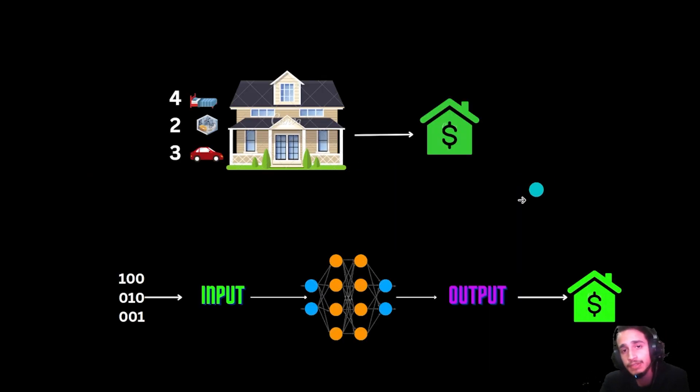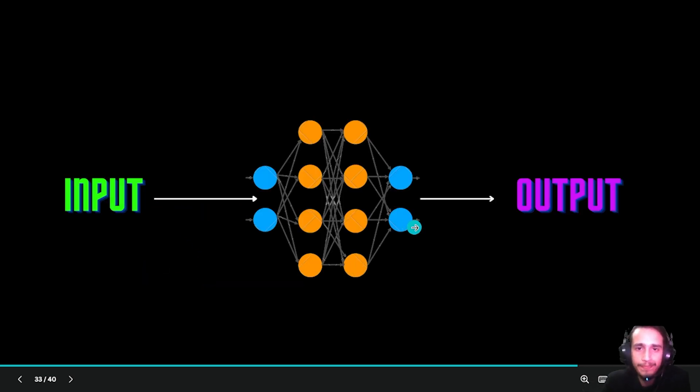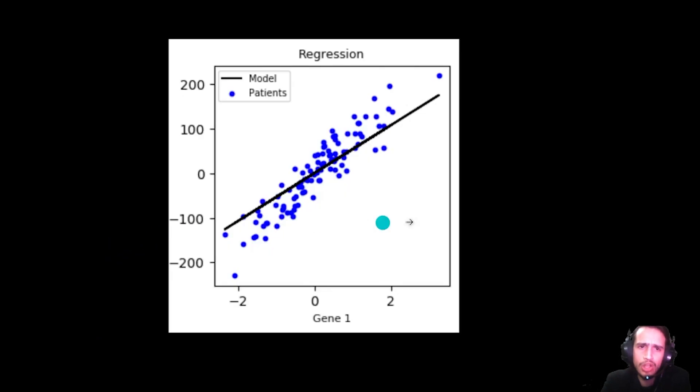The previous lecture on one-hot encoding is important to understand why we convert these to numbers, because our neural network only understands 0 and 1. This is all about regression problems.